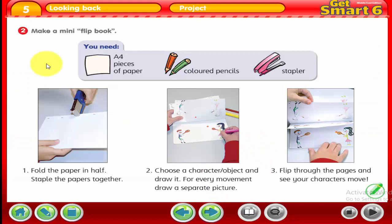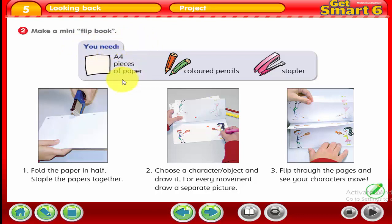Activity 2: make a mini flip book — something similar to animated films. We need some materials: A4 pieces of paper, colored pencils like this one, and a stapler.